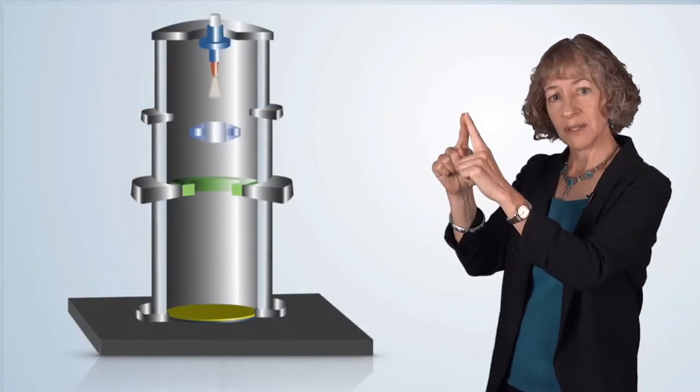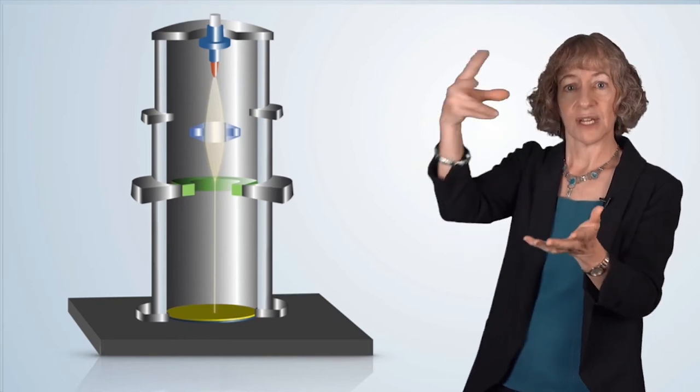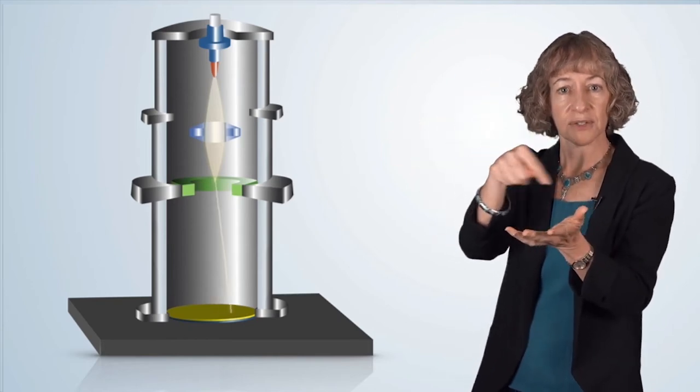The electron source emits electrons. The lens system focuses the beam, and the deflectors steer the beam across the substrate.